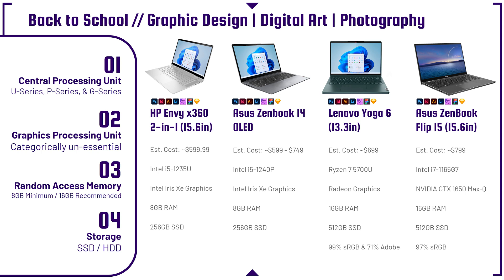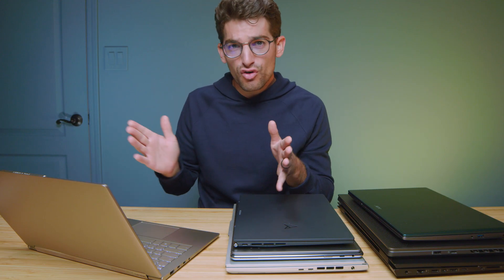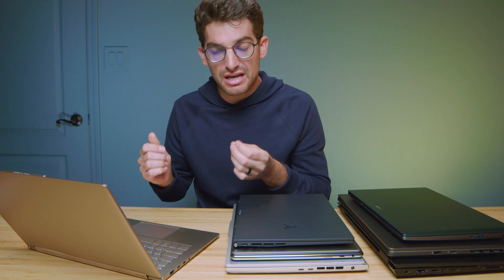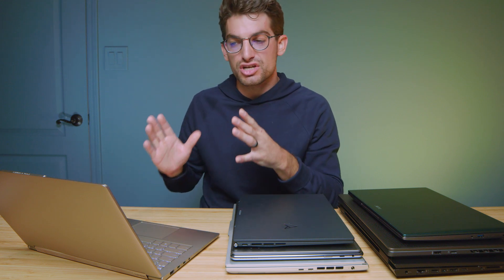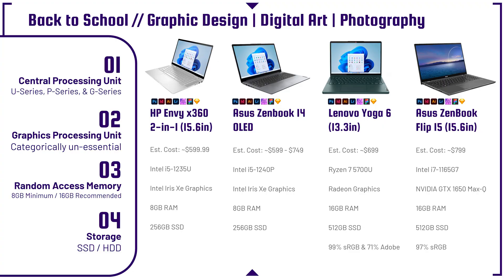The first category we're going to jump into is graphic design, digital art, and photography. We have four categories to look at: the CPU, GPU, RAM, and storage. For graphic design, digital art, and photography, you don't need a super powerful laptop — nothing too crazy like a gaming laptop. If you're going to be doing some motion design and video editing along with this, I'd push you towards the video editing category. But if you're strictly doing these tasks, you'll be fine here.